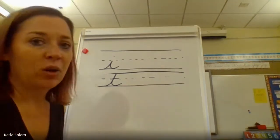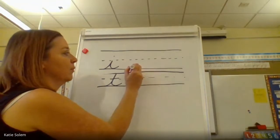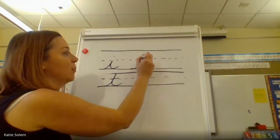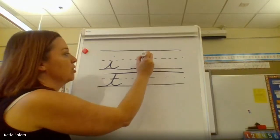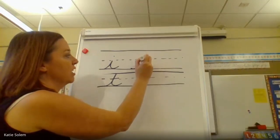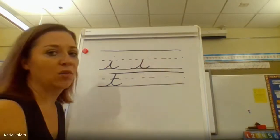To make a lowercase i, you start at the bottom and you're going to do a curve up just to the middle line. Then you're going to trace back down on that same line, curve down and then curve it out like a hook.